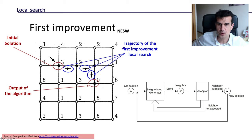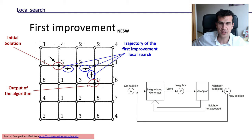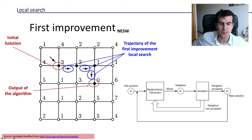Starting again at 3: we look north — that's 4, not better. We look east — that's 2, which is better, so we move there immediately. Now at 2: we look north — that's 2, equal but not better. We look east — that's 1, better, so we move immediately. Now at 1: we look north — 2, not better. East — not better. South — 0, that's better, so we move there. At 0: we look at all neighbors — 1, 6, 5, 3 — none are better, so the algorithm terminates.